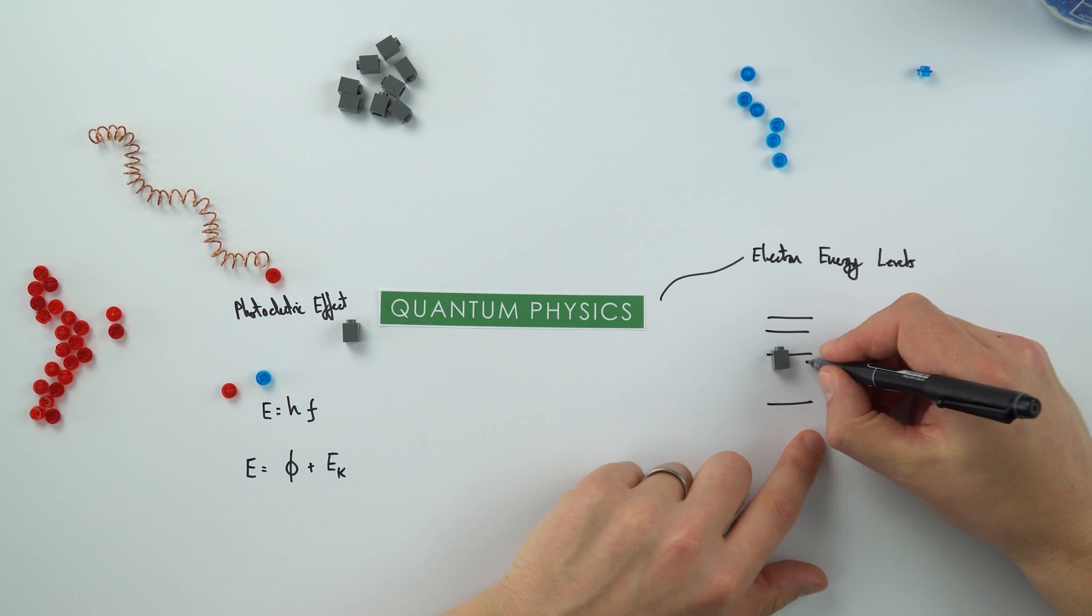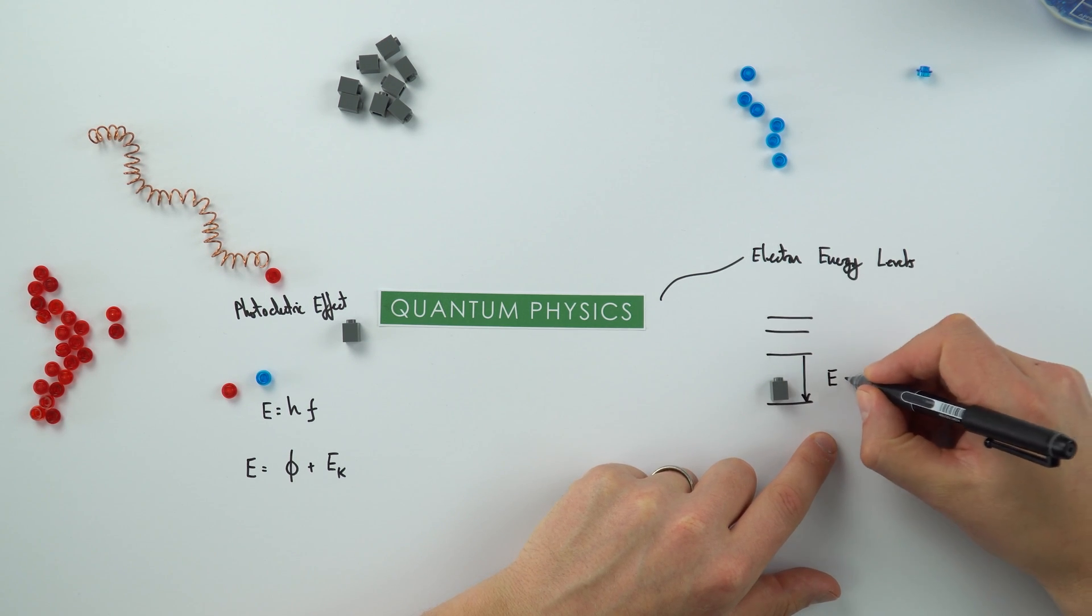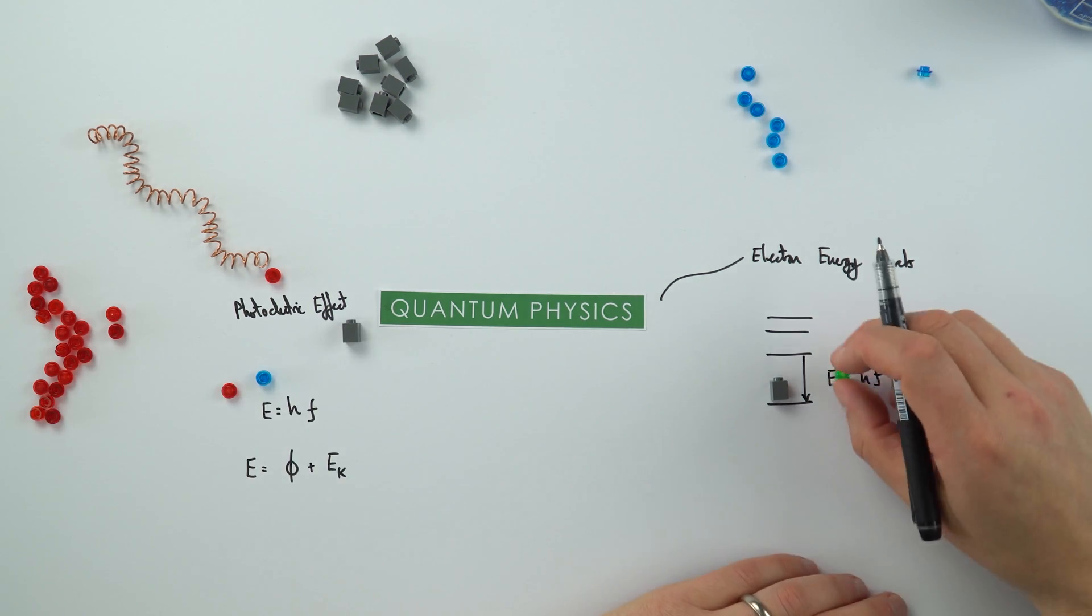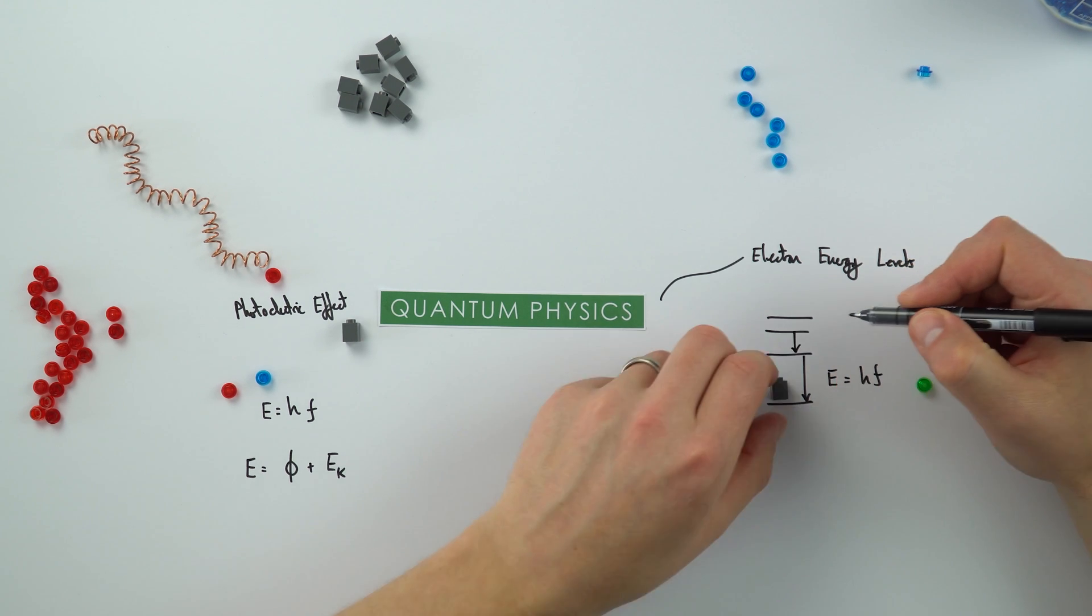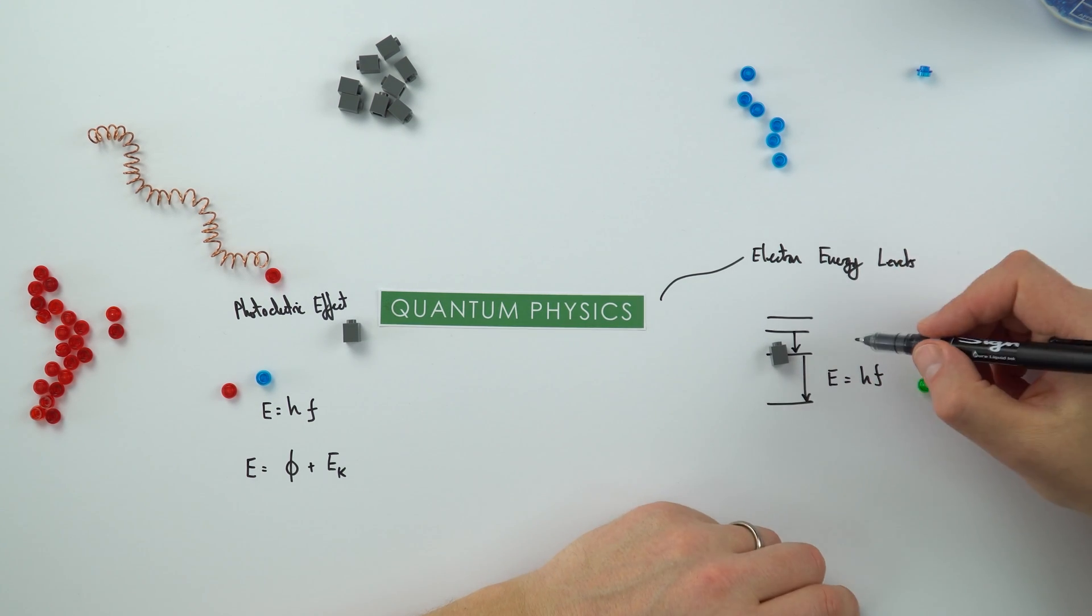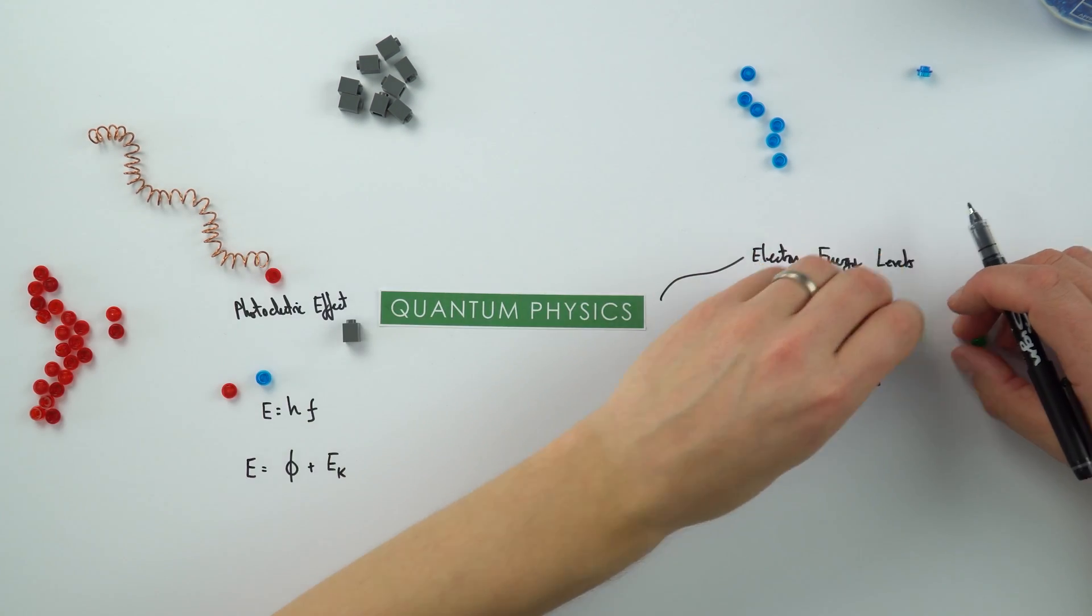Now if it does a big drop, perhaps from here to here, it's going to give out a lot of energy. And because E is equal to hf, that means that maybe this photon it gives out is perhaps a green photon. Maybe when it goes through a different energy change and maybe drops from this level to this level, it gives out a different amount of energy and therefore a different frequency. And depending on the size of the energy gap, it gives out different colored or different frequency photons.